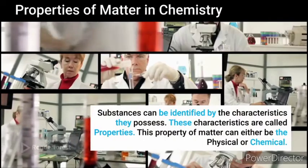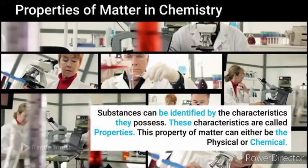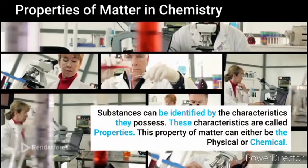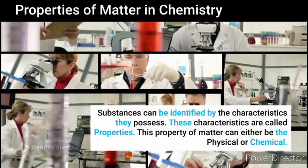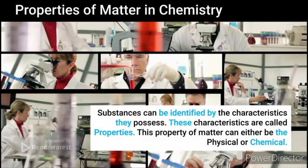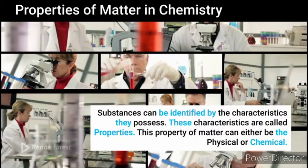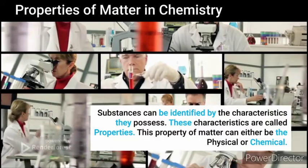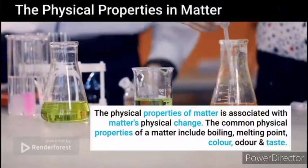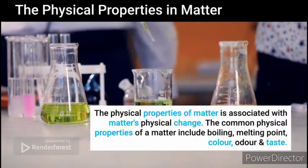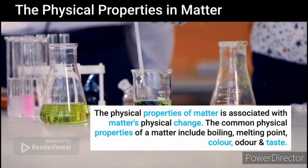Now let's talk about the properties of matter in chemistry. Substances can be identified by the characteristics they possess. These characteristics are called properties. The properties of matter can either be physical or chemical.